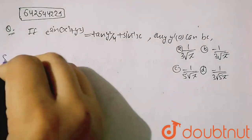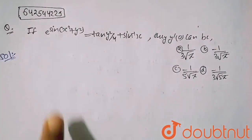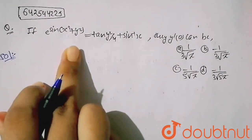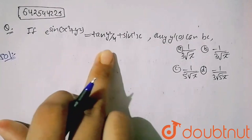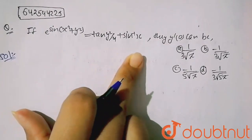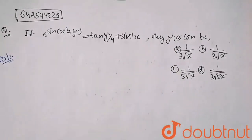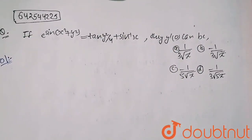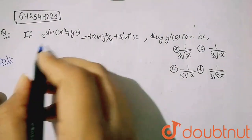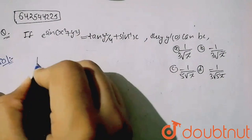Hello friends! In this question it is given that if e to the power sine of (x² + y²) is equal to tan(y²/4) plus sine inverse x, then y'(0) can be what? So here, first I will differentiate this equation with respect to x.